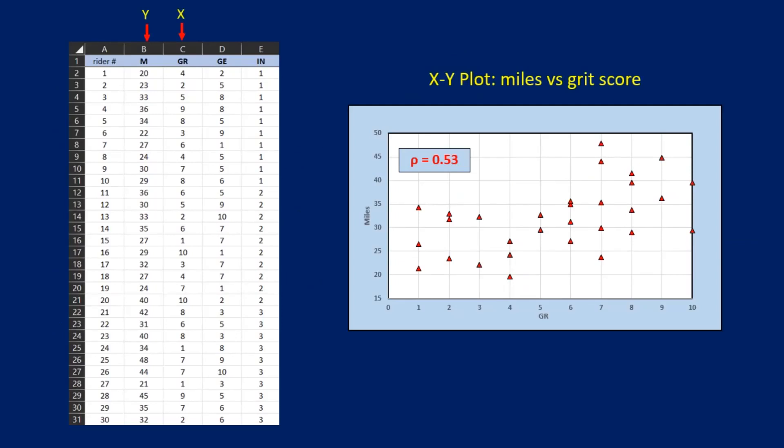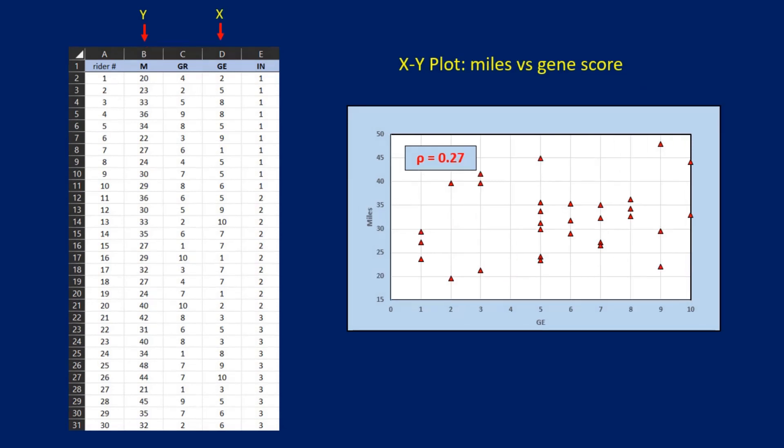Let's now look at the correlations between m and each of the explanatory variables in our dataset. Here's the XY plot of m versus gr. Excel calculates that rho for this pair of variables is 0.53, which is moderately strong. For m versus ge, rho is 0.27. This is fairly weak, but it's not 0.